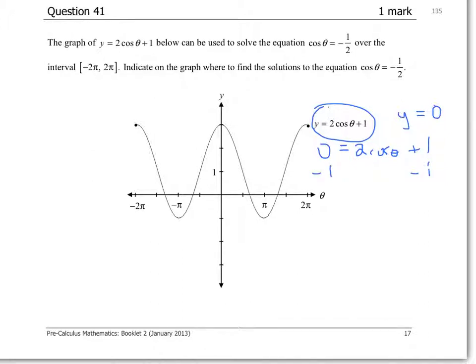we get negative 1 equals 2 cos theta. We divide both sides by 2 and we get cos theta equals negative 1 half.